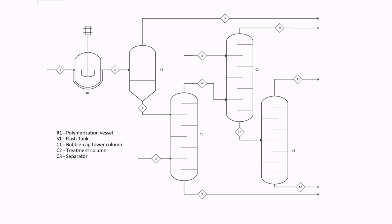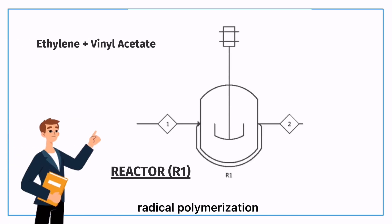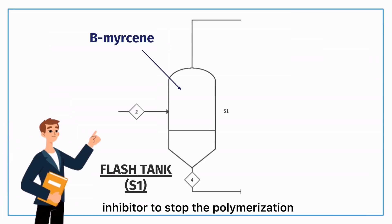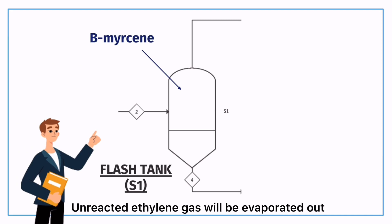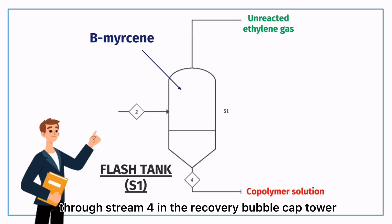This is the process flow diagram. First, in the reactor R1, ethylene and vinyl acetate will undergo radical polymerization with methanol as the solvent. Stream 2 enters the flash tank S1 in which beta-mercaptan is used as polymerization inhibitor to stop the polymerization. Unreacted ethylene gas will be evaporated out and the copolymer solution will be sent to C1 through stream 4.